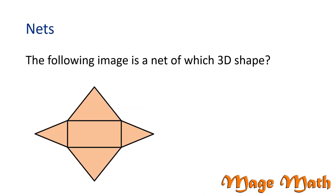What about this problem? The following image is a net of which 3D shape? This net is made up of four triangles and one rectangle. If we fold along these marked lines, the figure will fold into a type of pyramid.